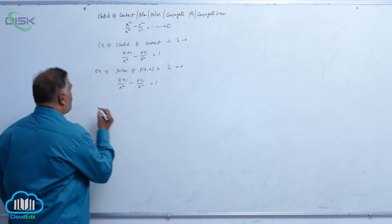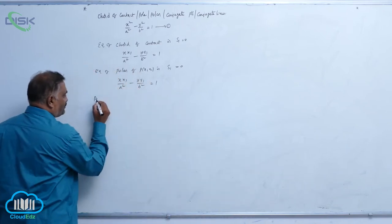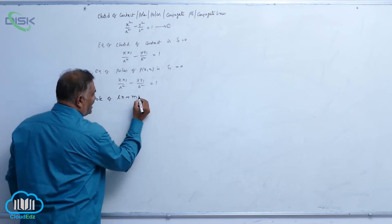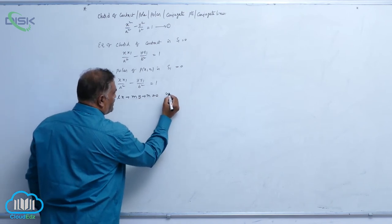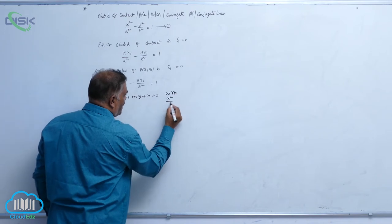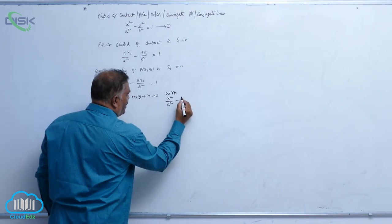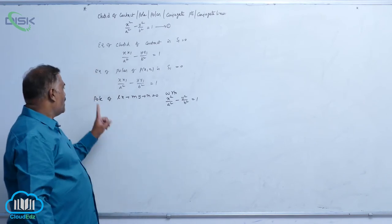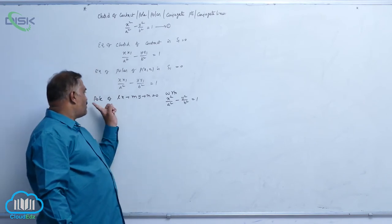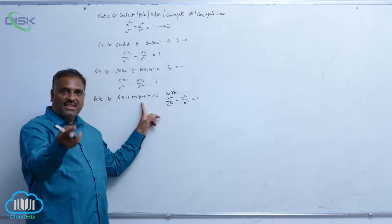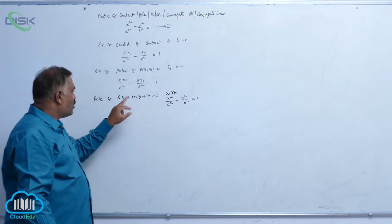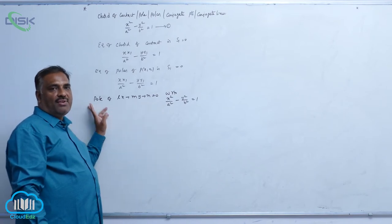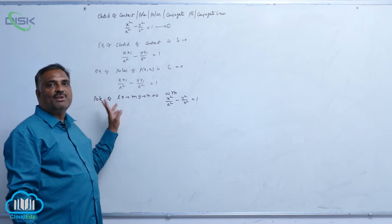Now let us find the pole of lx plus my plus n equal to 0 with respect to x square by a square minus y square by b square equal to 1. When we say the pole of some line, that line is essentially a polar — for every polar there exists a pole, and for every pole there corresponds one polar.